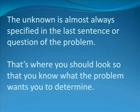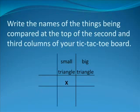So that's where you should look so that you know what the problem wants you to determine. Next, write the names of the things being compared at the top of the second and third columns of your tic-tac-toe board. The second column name should be the name of the object that has an unknown value associated with it, and the third column should be the name of the object for which you were given values for both characteristics.